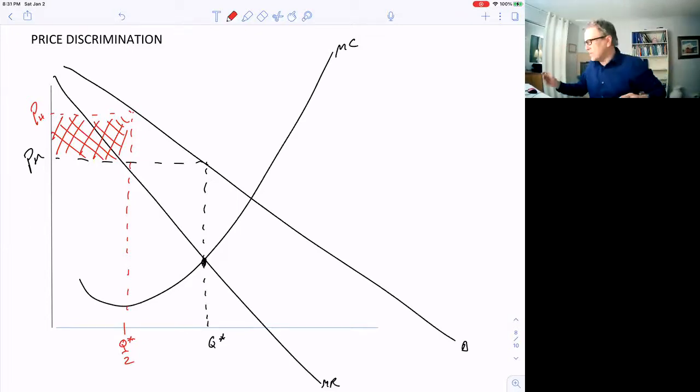Universities and colleges price discriminate. It might be surprising. How do they tell the different demand by their students? Well, there's a financial aid form. You have to fill out your income and wealth for whoever's paying the college bill.